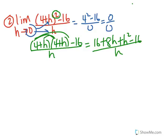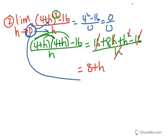Then you can simplify. The 16s end up canceling. The h can also cancel with each of those terms — since I had an h in both, I could cancel one. So this expression simplifies into 8 plus h. Now you're able to plug in your limit, and you end up getting the limit as 8.